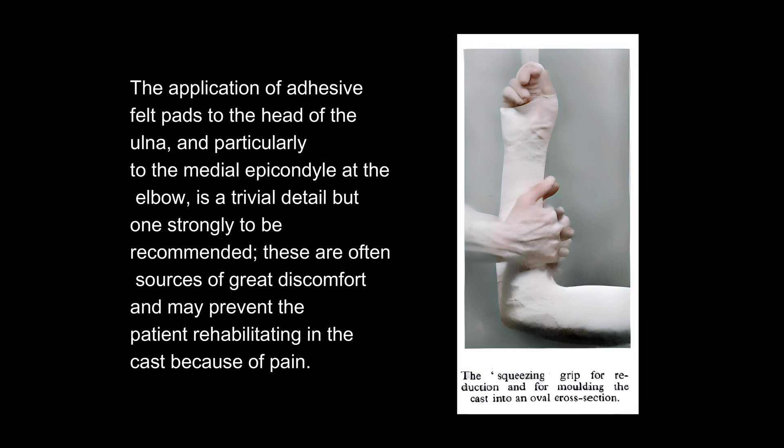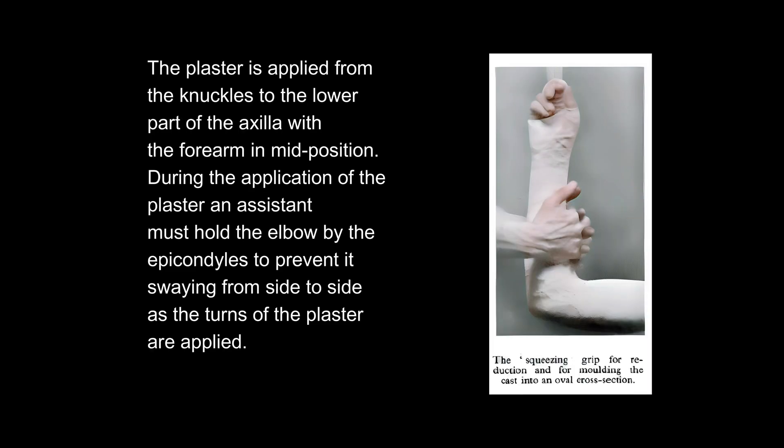These are often sources of great discomfort and may prevent the patient rehabilitating in the cast because of pain. The plaster is applied from the knuckles to the lower part of the axilla, with the forearm in mid-position.